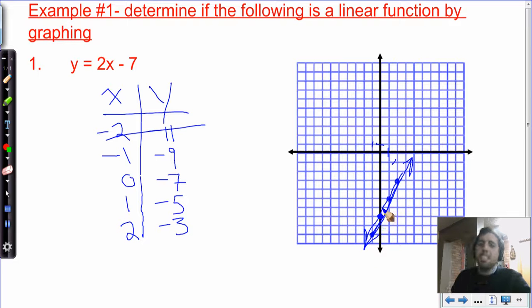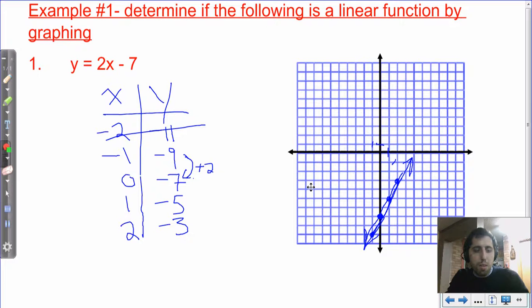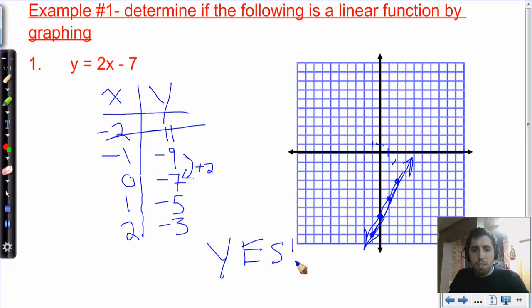We do have a linear function. It's not vertical, and it is a straight line. Also, we have this constant rate of change. It's increasing by 2 each time. We're just adding 2 every time we increase x by 1. So for every same change in x, increasing by 1, our y is increasing by the same amount. So we've got a linear function here. So I should put yes, in big capital letters. Yes, hooray, linear function.